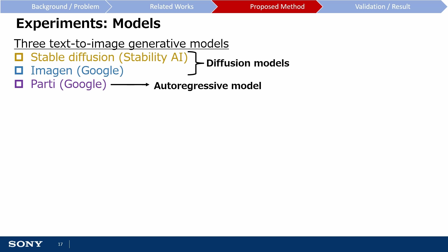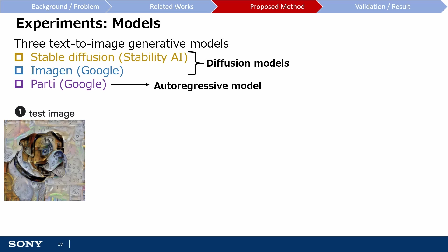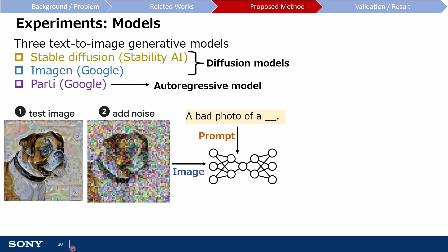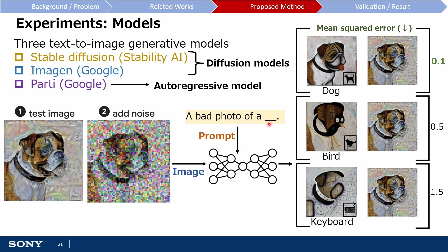Let me now explain how these generative models were used to perform classification. Starting with an image to classify, the first step involves adding noise to the image. Then, the noised image together with a text prompt that reads 'a bad photo of A' followed by a blank space are used as inputs into the text-to-image generative model. The blank space is replaced with different classes like dog, bird, or keyboard. The model then generates an image using the prompts, and the final model prediction is the class whose generated image has the lowest mean squared error with the original image.